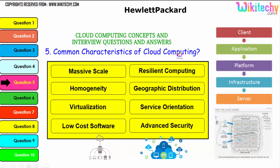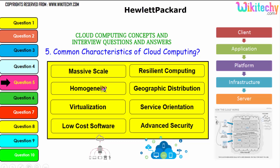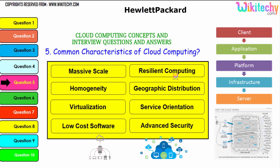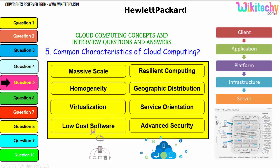Let's talk about the common characteristics of cloud computing. These are very important. Massive scale — as big as you want. Homogeneity — uniform use across the platform. Virtualization — you can create a virtual machine and use it. Low-cost software — it becomes much cheaper. Resilient computing — processing is done remotely. Geographic distribution — data and computing processes are geographically distributed. Service orientation — purely service-based. And advanced security — that's an important one.